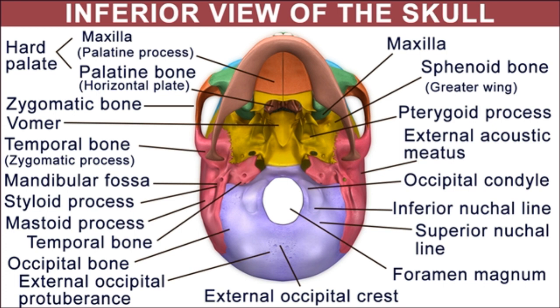The basilar section is located in front of the foramen magnum. The two lateral sections are located on either side of the foramen magnum. The foramen magnum is located at the center of the occipital bone. It acts as a passageway for the spinal cord, as the medulla oblongata becomes continuous with the spinal cord, playing a vital role in the communication between the brain and the spinal cord.